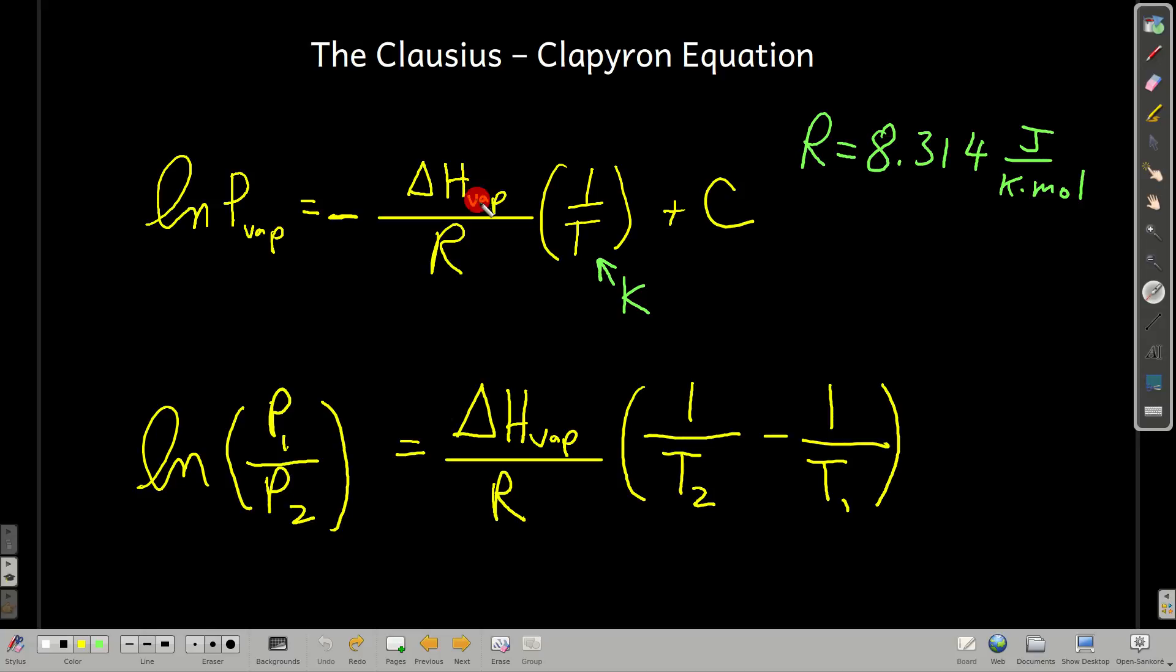We're assuming that this stays constant over the temperatures. And so the slope would be this. We could just multiply the slope by negative R, and we would get the heat of vaporization. Useful thing to know.